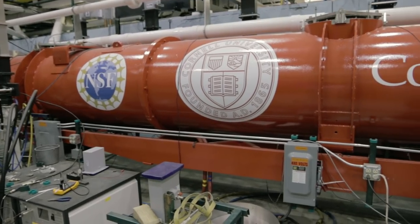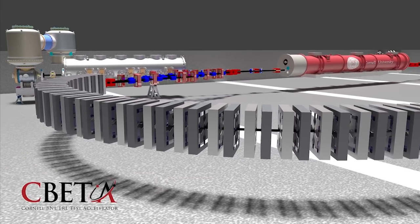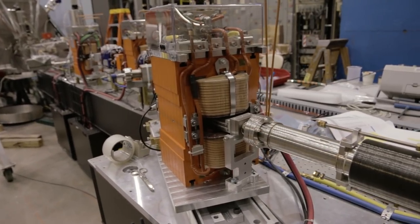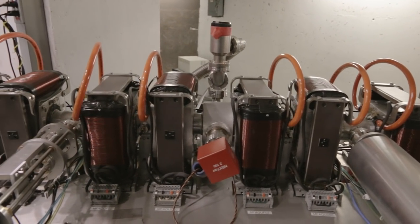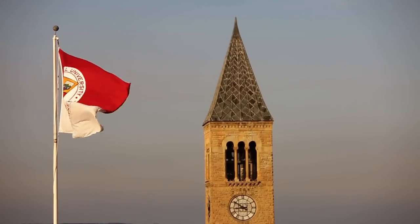You may also tour our new prototype accelerator. C-beta is the most ambitious prototype of an energy recovery LINAC, or ERL, to date. ERLs are a new style of accelerator which promise high beam power while requiring little energy to run. This concept was invented and developed right here at Cornell.